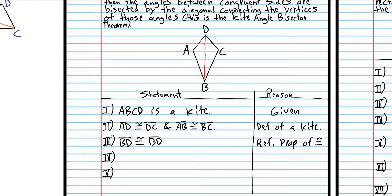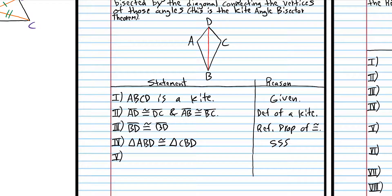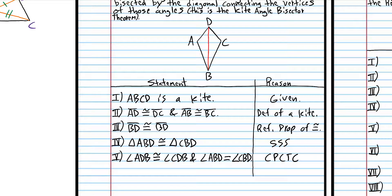Triangle ABD is congruent to triangle CBD — that is just the SSS triangle congruence postulate. Now that we know those triangles are congruent, the corresponding parts are congruent. That means angle ADB is congruent to angle CDB. And that is corresponding parts of congruent triangles are congruent.